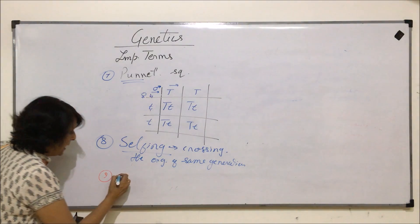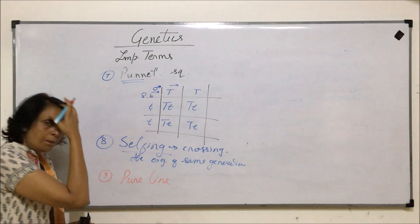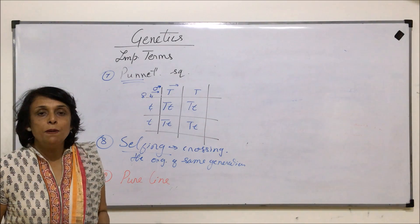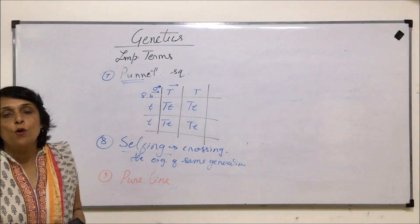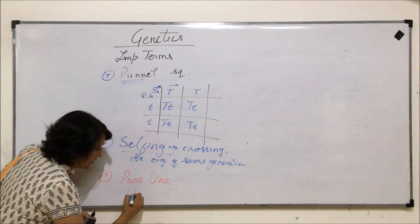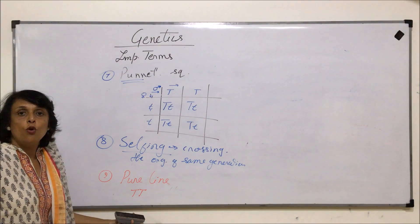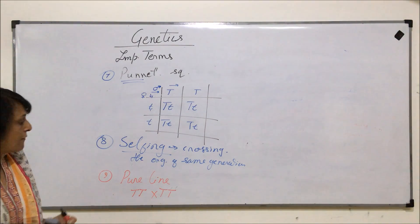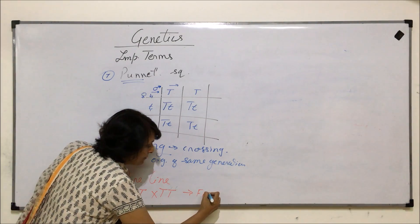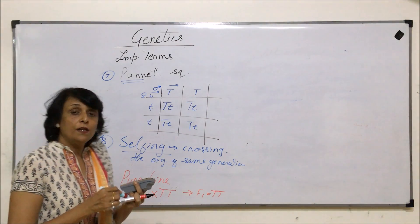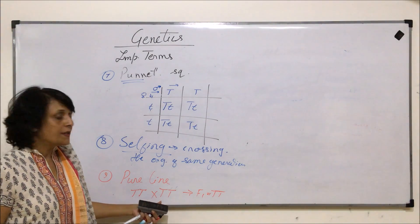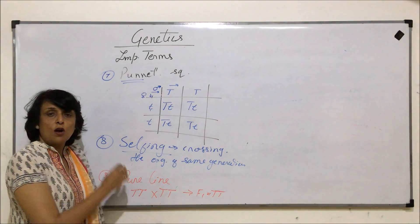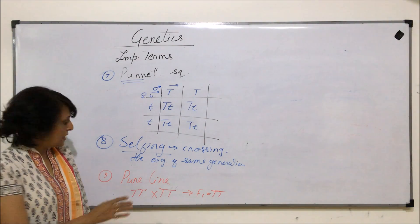Another important term is pure line. Pure line is normally used when we have a particular genotype being selfed for more than five consecutive generations. For example, homozygous dominant — capital T, capital T — crossed with homozygous dominant. In F1, all the plants will be the same, all capital T capital T. We continue doing this for at least five generations. The purpose is to get plants which show only one type of genotype. This gives us a pure line.